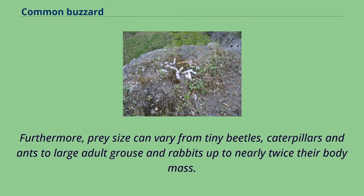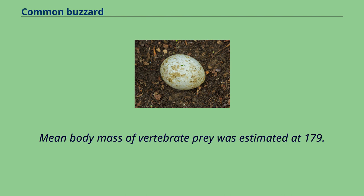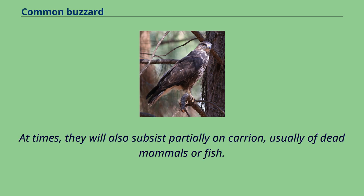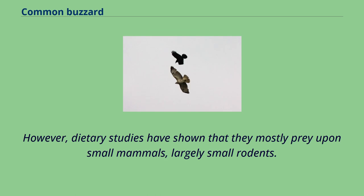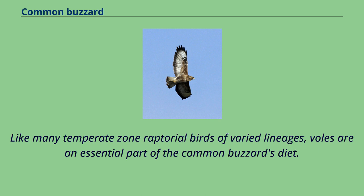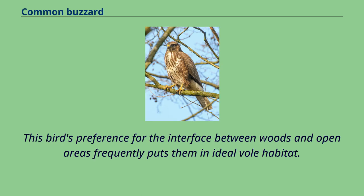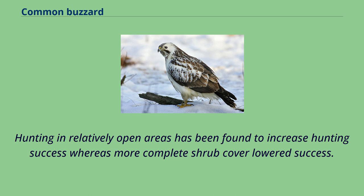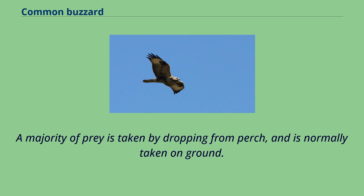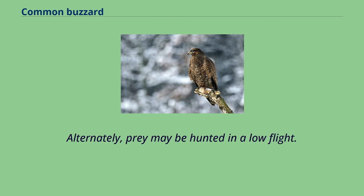Mean body mass of vertebrate prey was estimated at 179.6 grams in Belarus. Dietary studies have shown that they mostly prey upon small mammals, largely small rodents. Like many temperate zone raptorial birds, voles are an essential part of the common buzzard's diet. This bird's preference for the interface between woods and open areas frequently puts them in ideal vole habitat. Hunting in relatively open areas has been found to increase hunting success whereas more complete shrub cover lowered success. A majority of prey is taken by dropping from a perch and is normally taken on the ground. This species tends not to hunt in a spectacular stoop but generally drops gently then gradually accelerates at the bottom with wings held above the back.